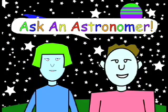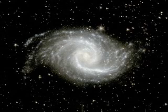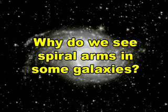Ask an Astronomer. Why do we see spiral arms in some galaxies? Spiral galaxies get their name from the shape of their discs, in which clouds of stars that we call spiral arms extend outward from the central nucleus of the galaxy. These apparent structures are caused by gravity.